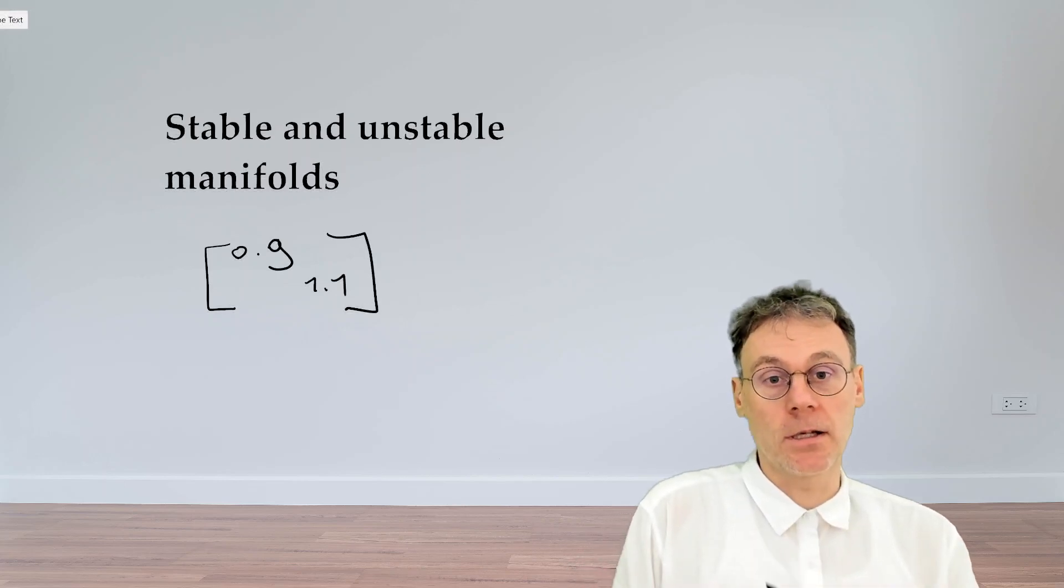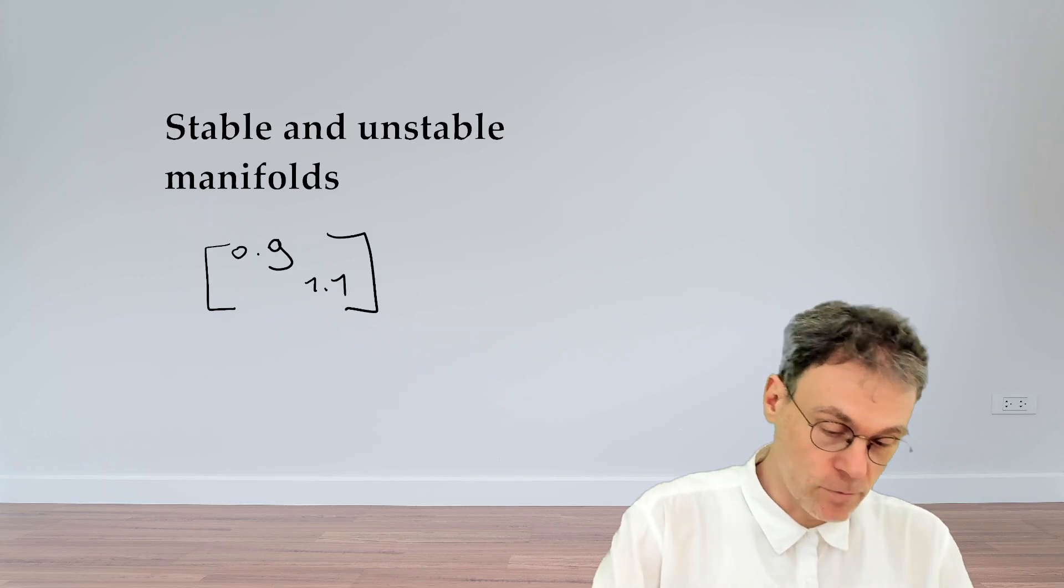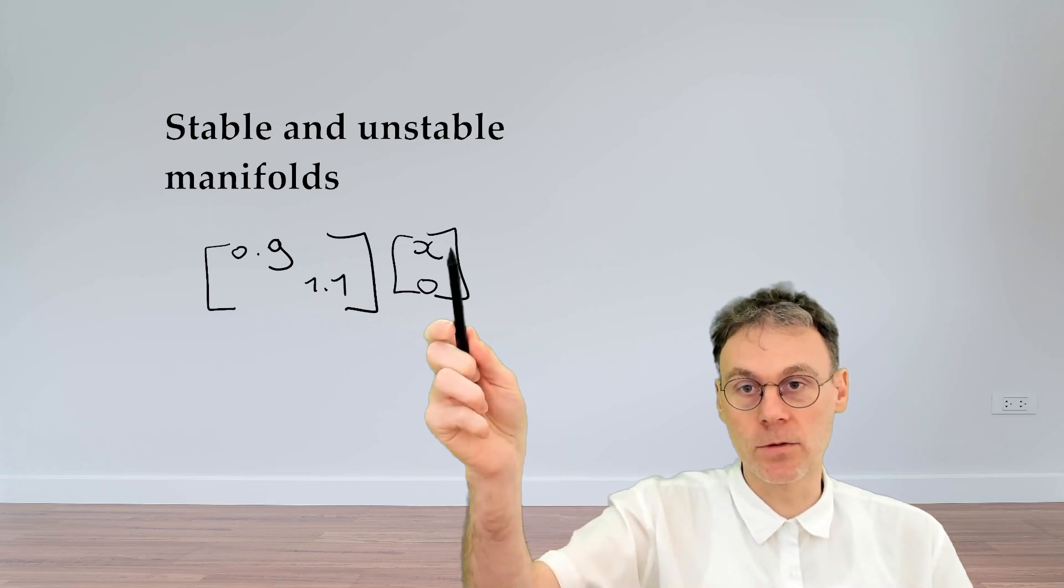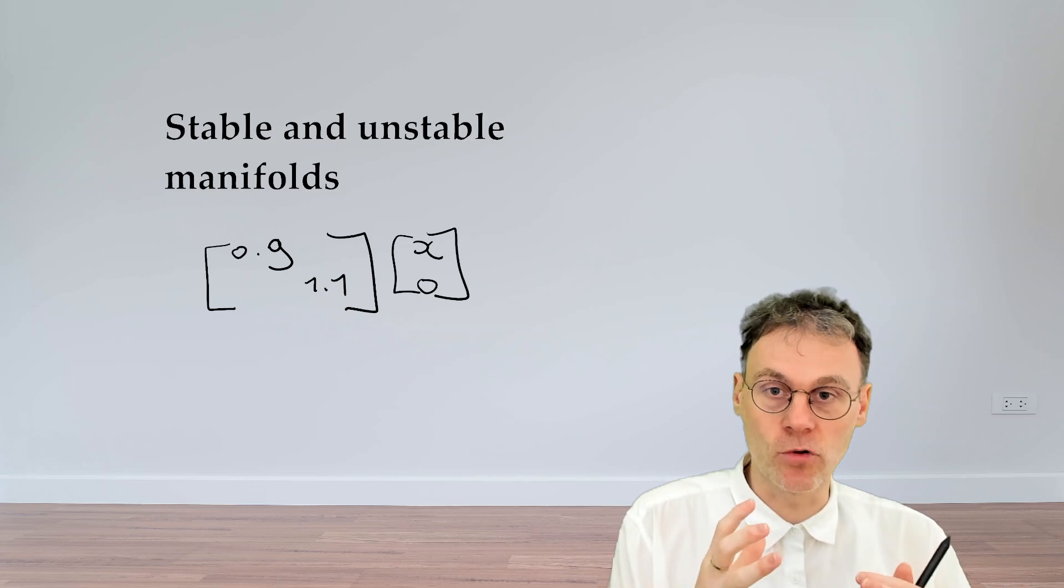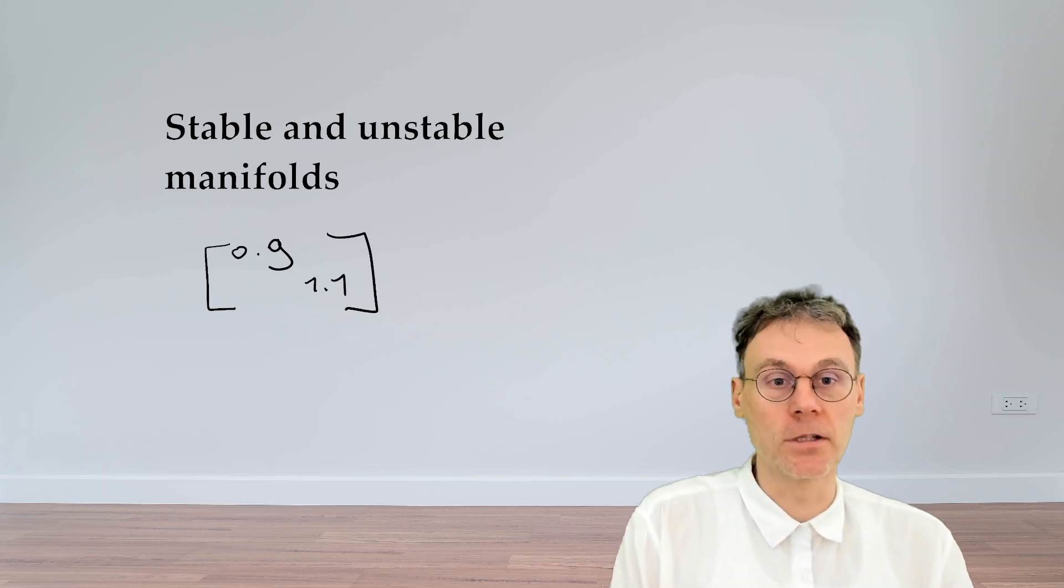So the answer is that it's the x-axis that will basically map towards the origin because if you multiply by a vector like this you see that x will get multiplied by 0.9 every time so the x value will shrink until it eventually ends up at the origin. The x-axis is the attracting direction of the saddle.